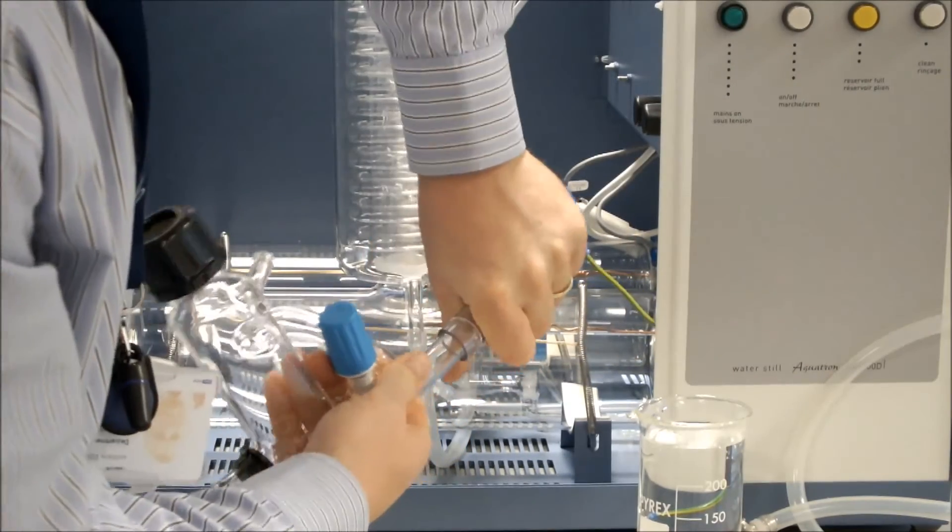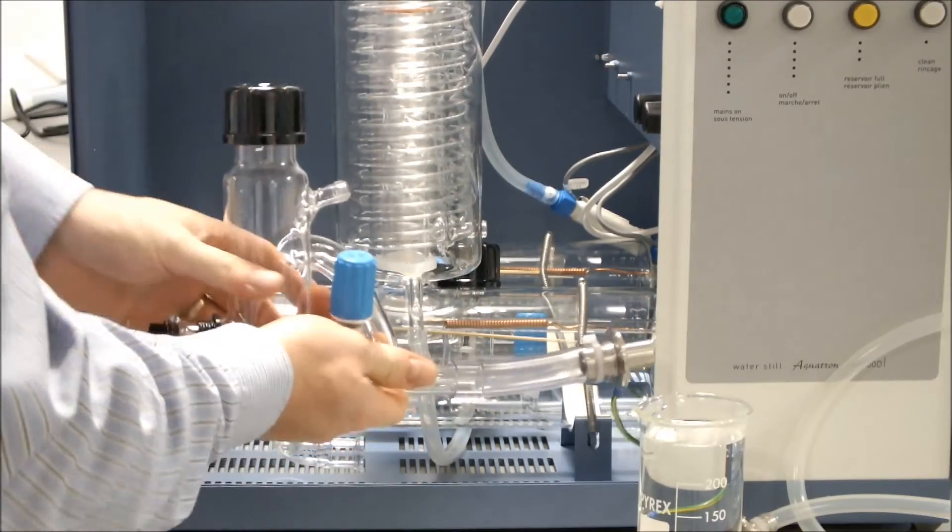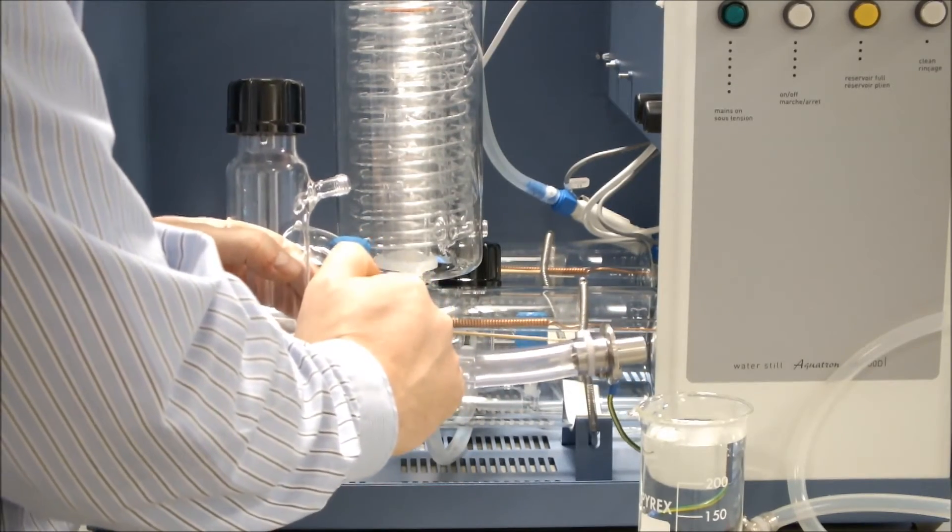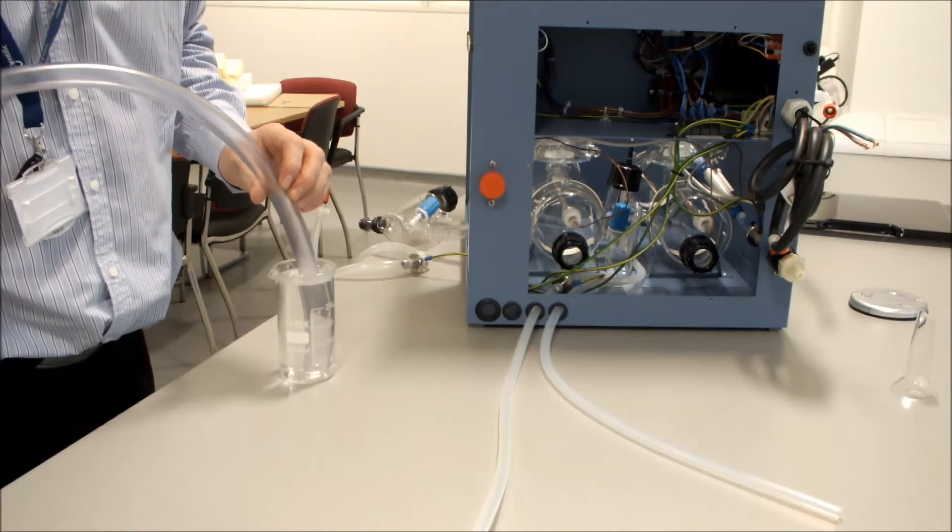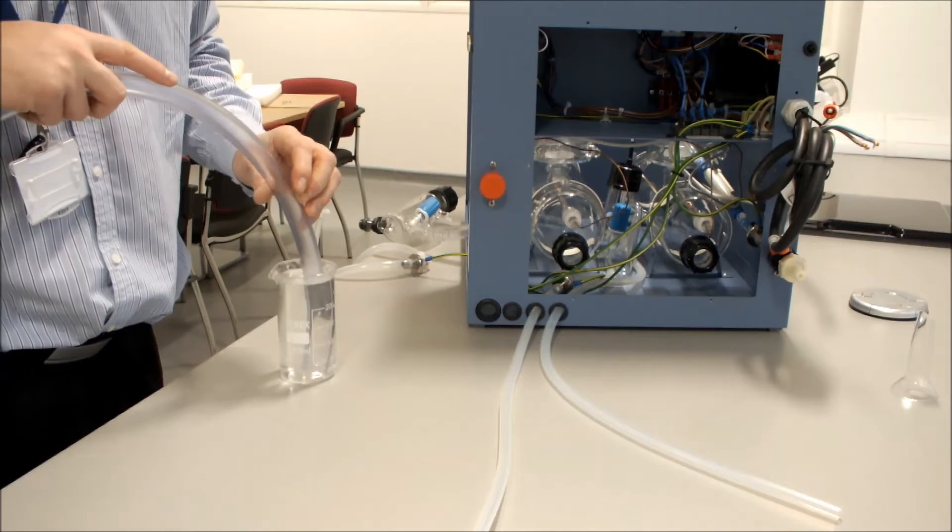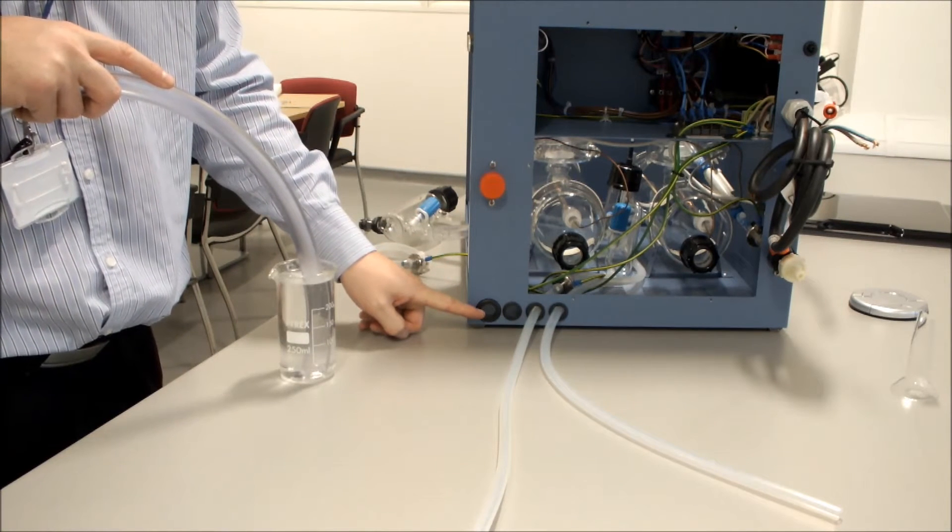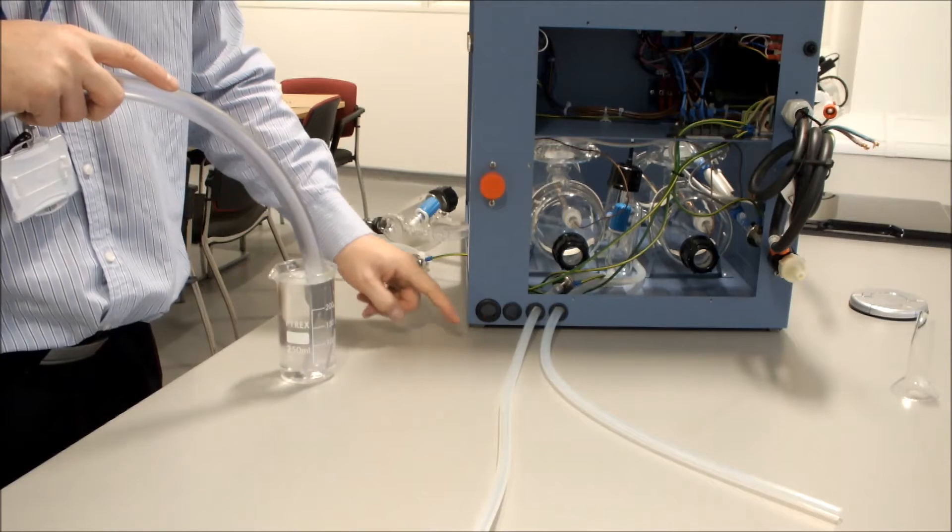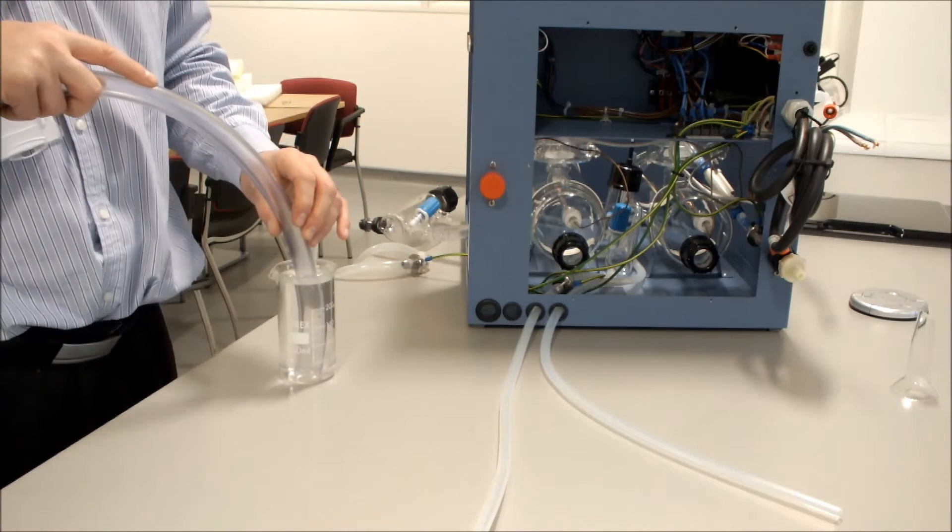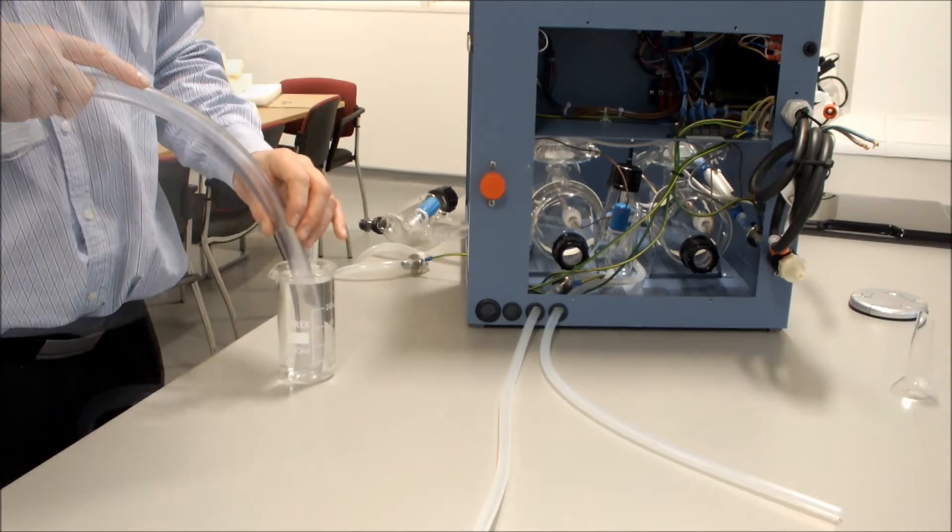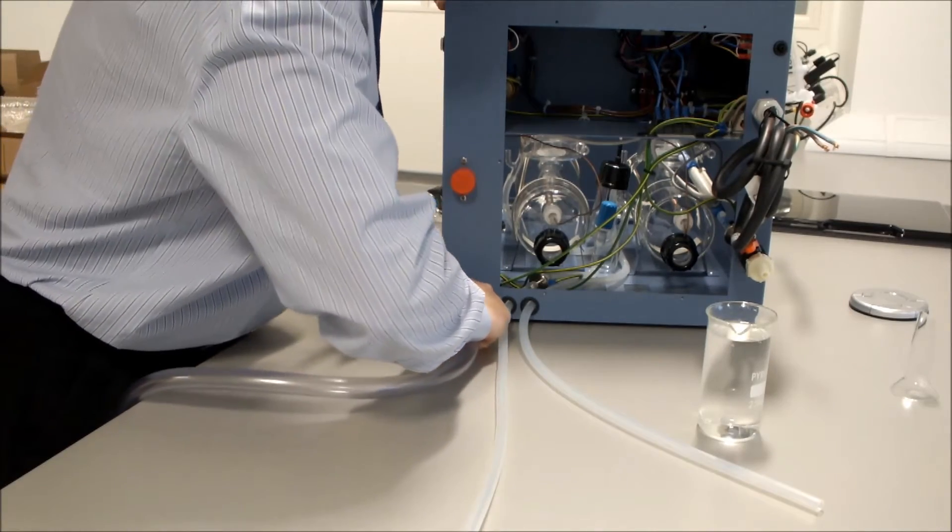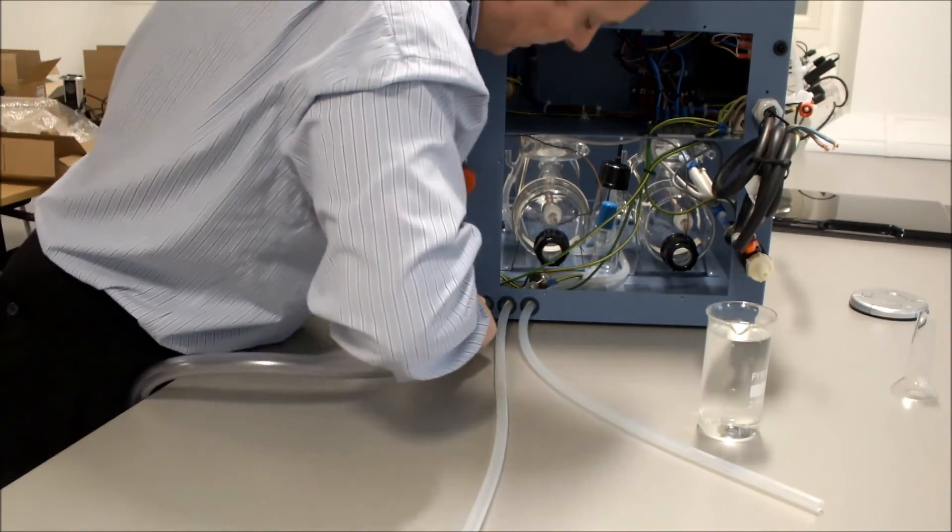We will then fit our 1 meter of 16mm hose and we will insert this from outside to in through the largest of the holes on the side of the unit. Again first of all we'll immerse it in hot water for approximately 20 seconds.